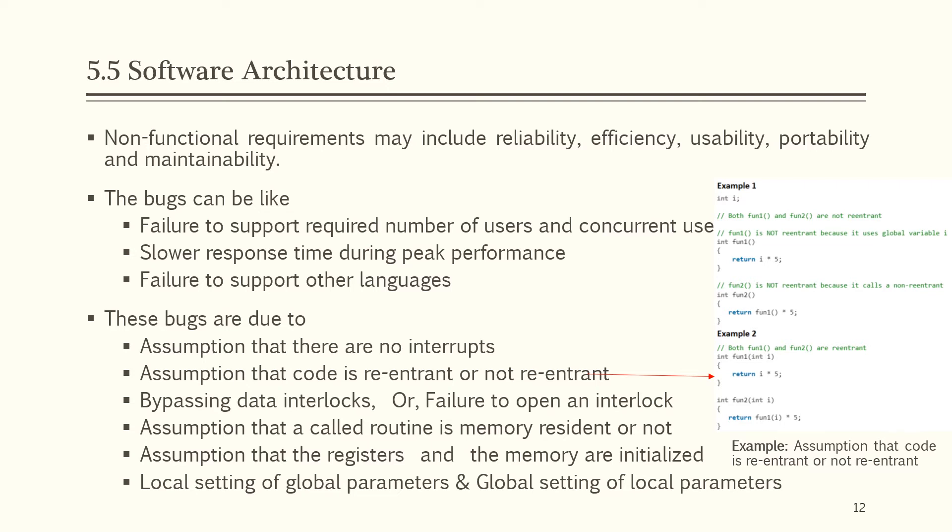Bypassing data interlocks or failure to open an interlock is another bug source. If a deadlock occurs because two processes access the same resources in a different order, it may be resolved by changing the order of blocking resources. If a certain set of resources are blocked in different operations, the same resources should always be blocked first — this applies to any systems in which interlocks occur.